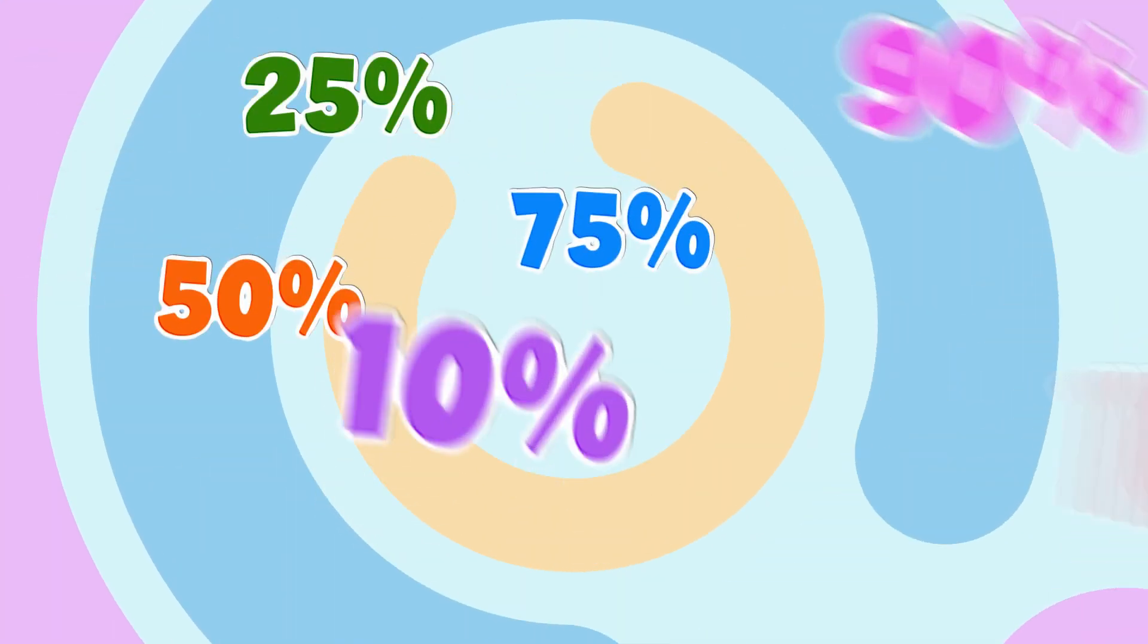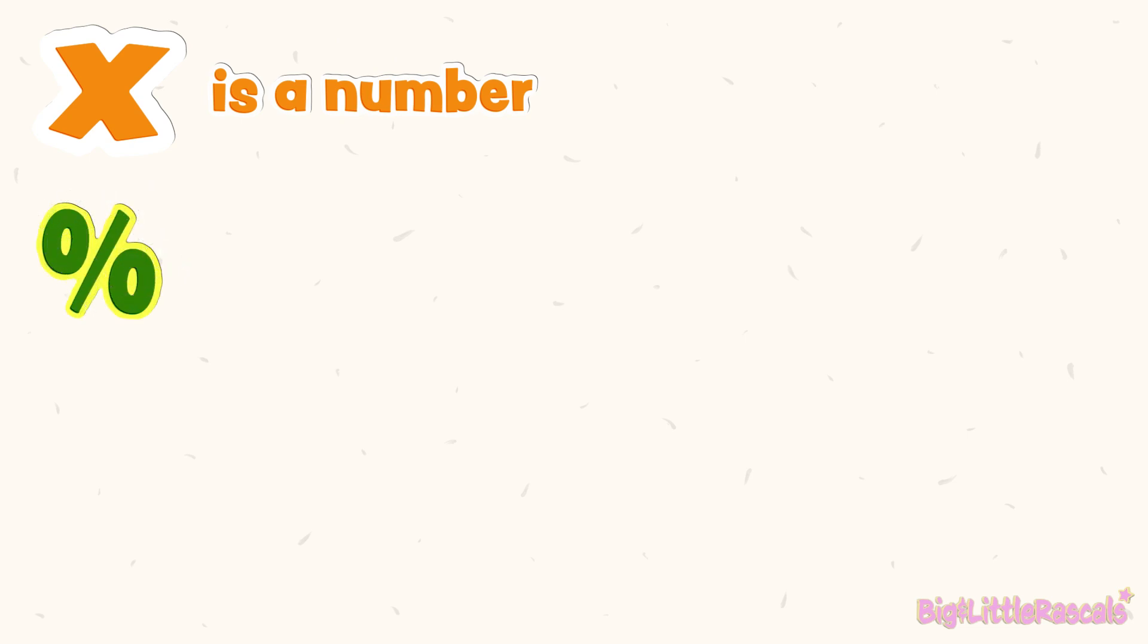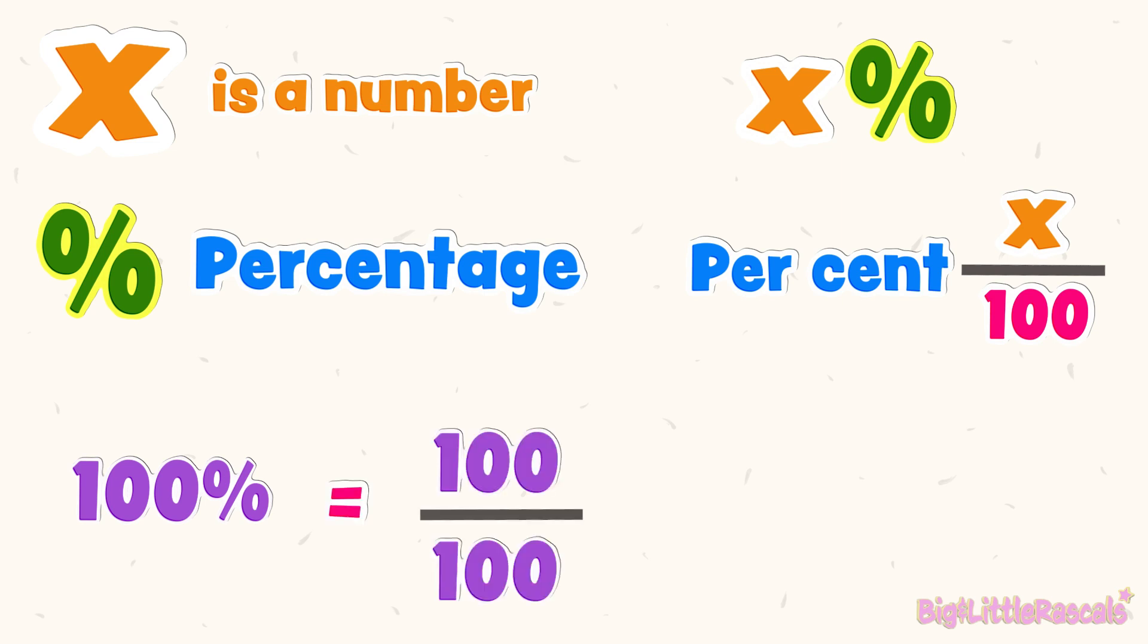Have you seen this kind of numbers before? So, what do they mean? Let's say X is a number. This symbol, percentage, is to represent percentage. So, this is X percent means per cent. In fraction means X per 100. One hundred percent means hundred out of hundred, which is equal to one whole. X can be any number.